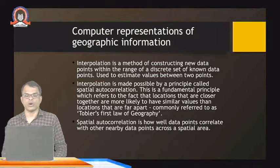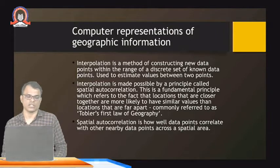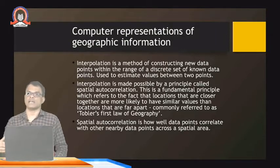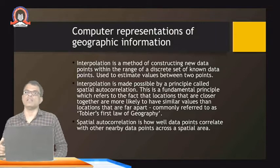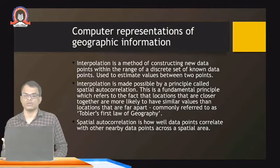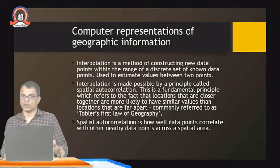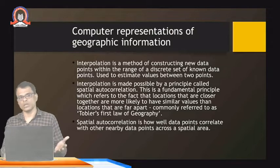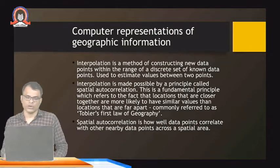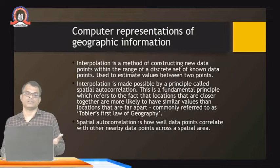Spatial autocorrelation describes how well data points correlate with each other across a spatial area. If the start and end points are nearby, the in-between values are more likely to be similar to each other; if they are far apart, those values cannot be assumed similar. So far we have covered geographic objects, boundaries, and how to represent objects on a computer screen using GIS software.